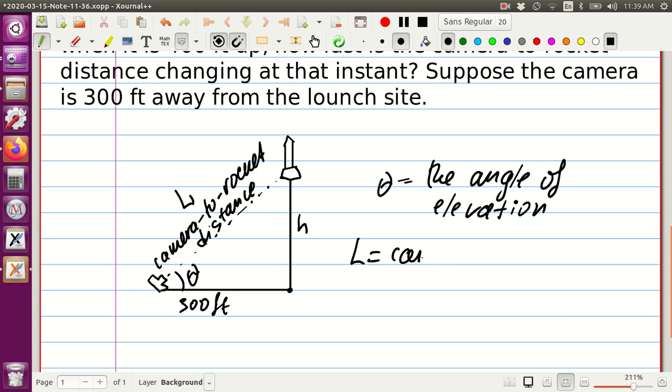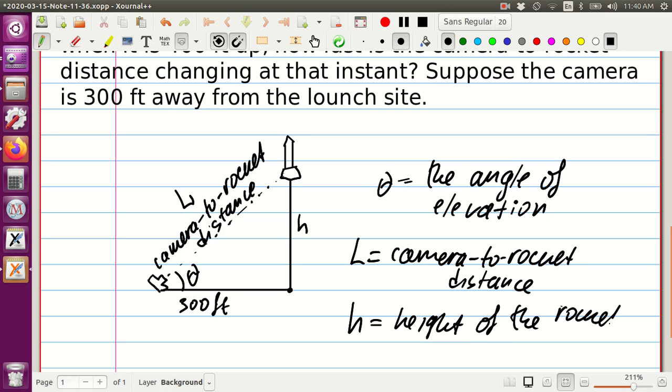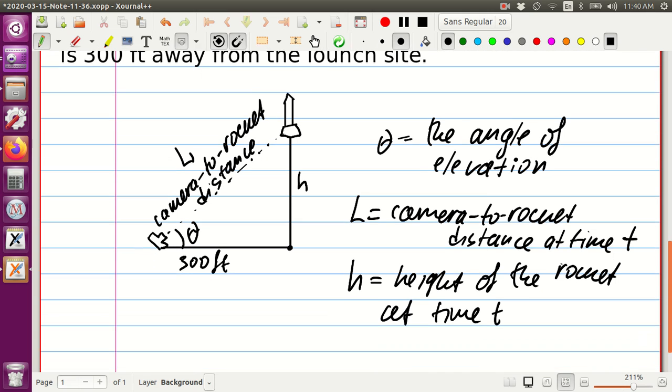So let's try to write it up. L would be camera to rocket distance, and h would be the height of the rocket at time t.